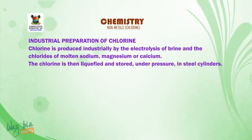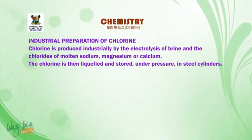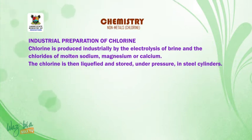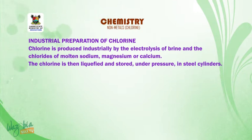Industrial preparation of chlorine. Chlorine is produced industrially by the electrolysis of brine and the chlorides of molten sodium, magnesium or calcium. The chlorine is then liquefied and stored under pressure in steel cylinders.